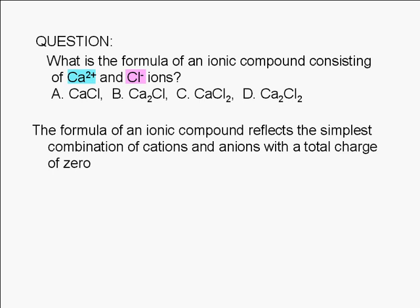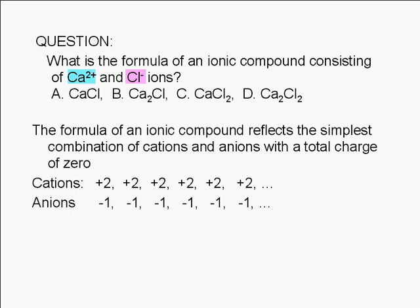Let's imagine we have a collection of calcium ions. Remember that each one has a charge of positive two. In a collection of chloride ions, each of these ions has a charge of negative one.